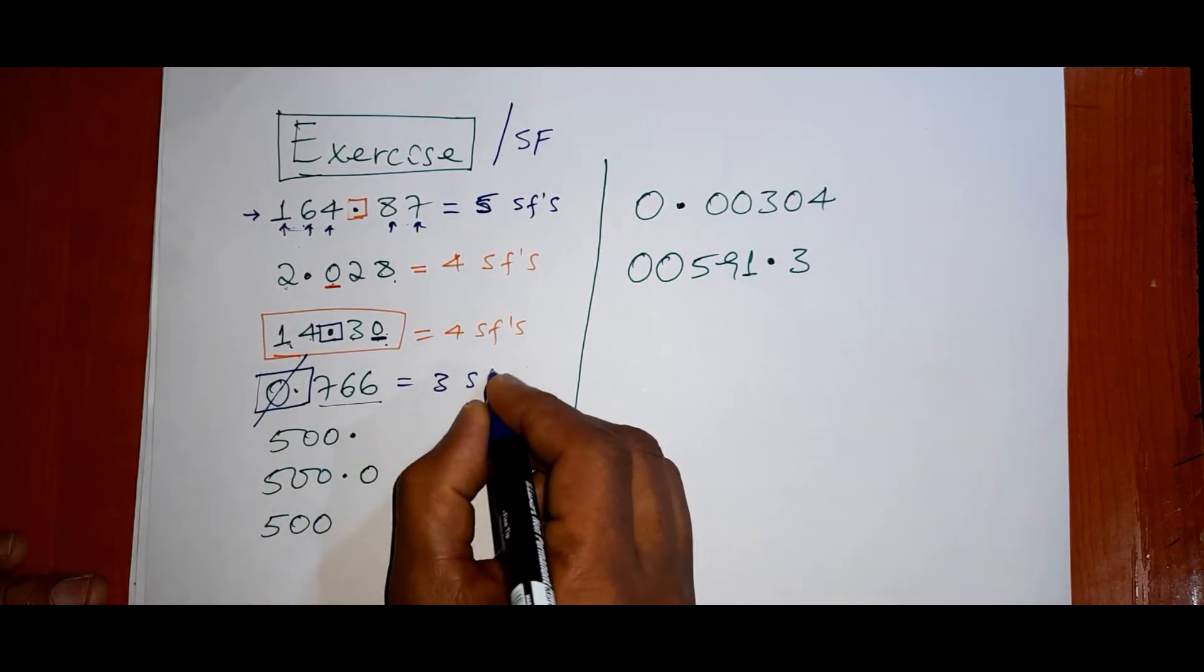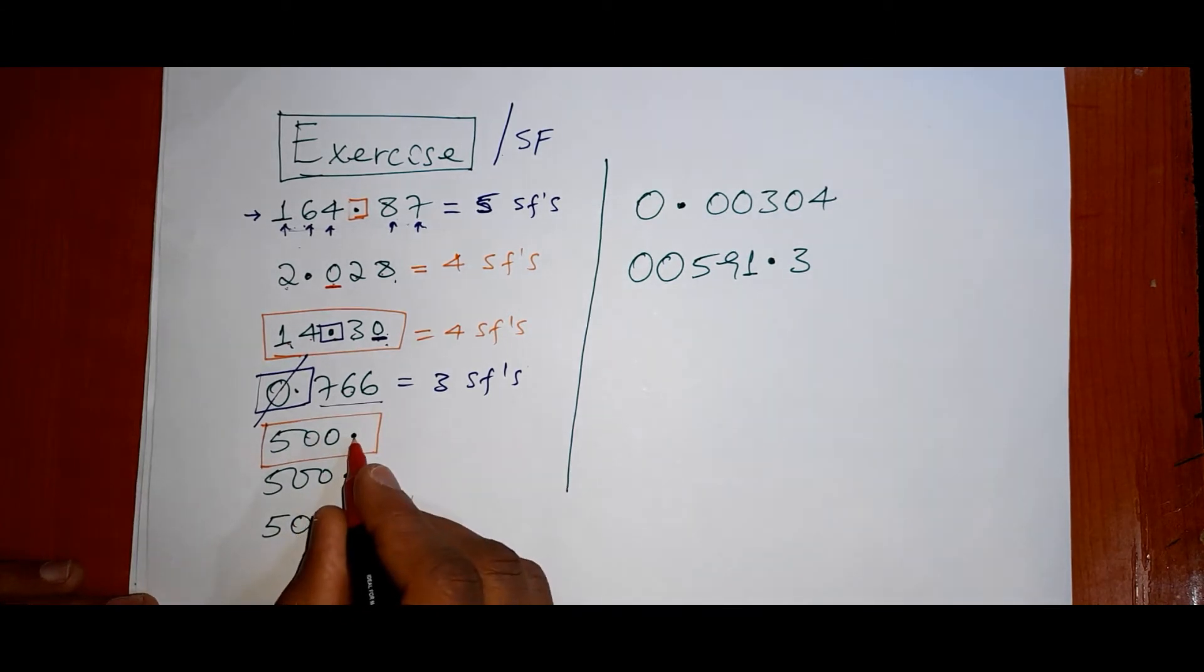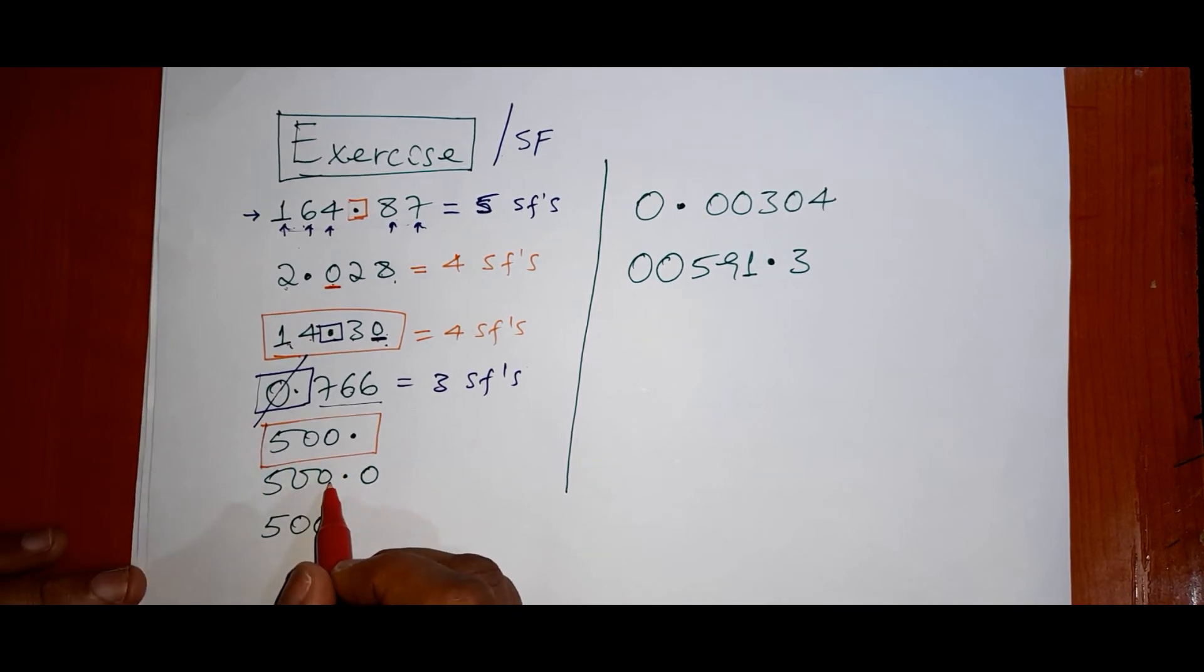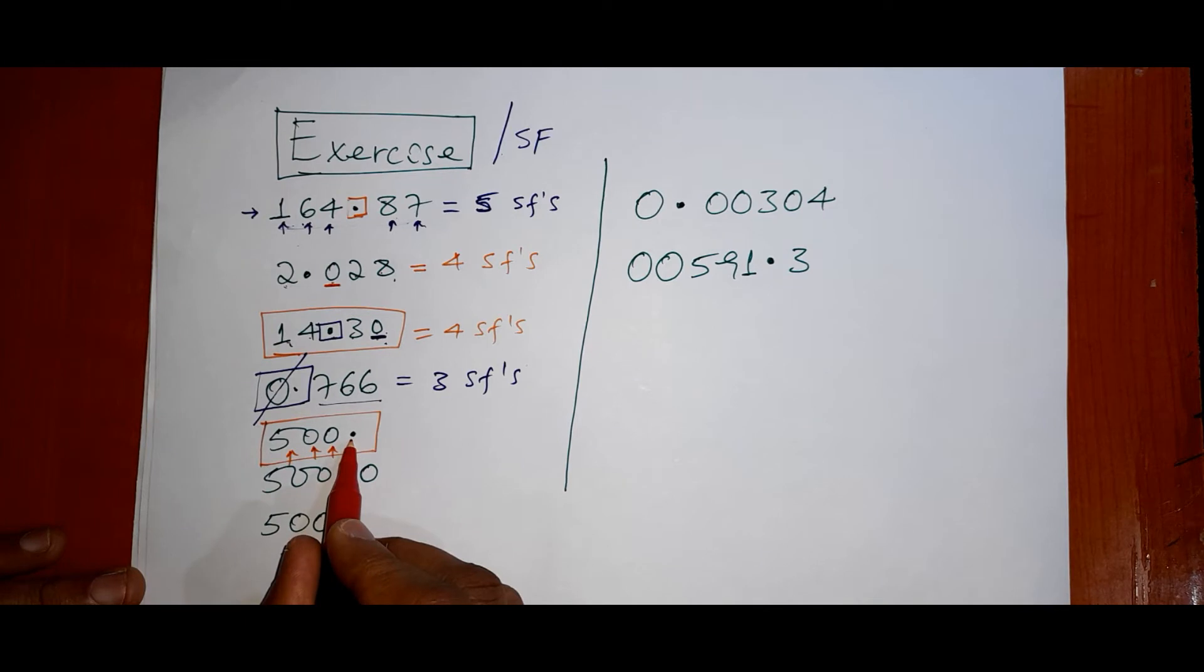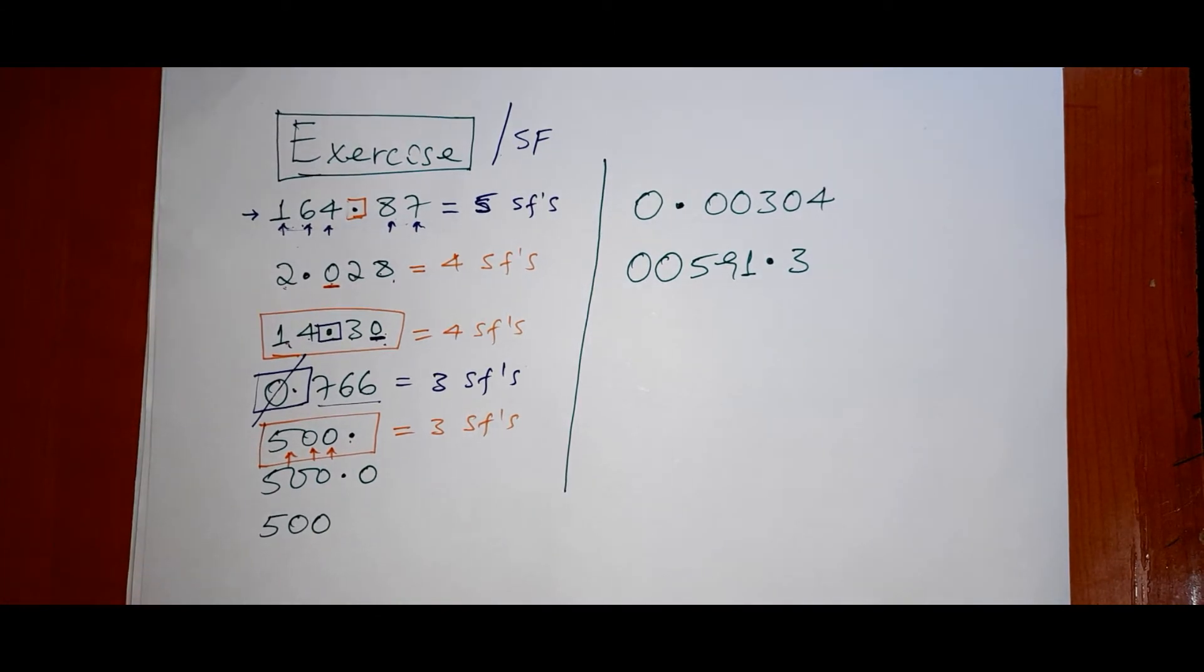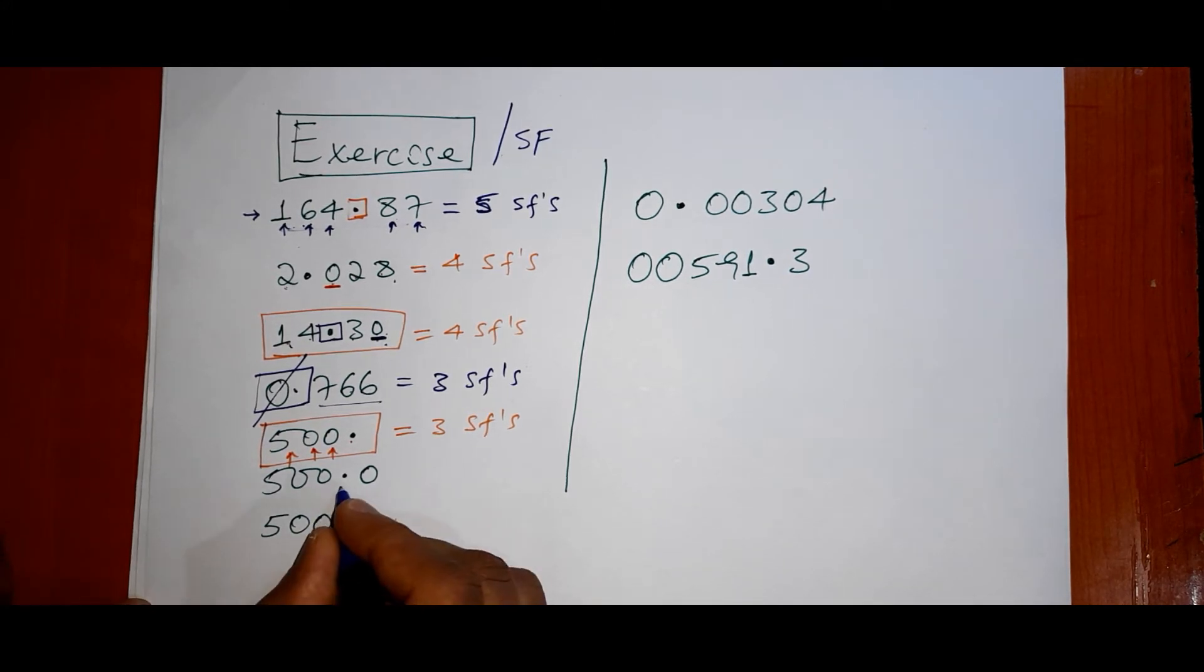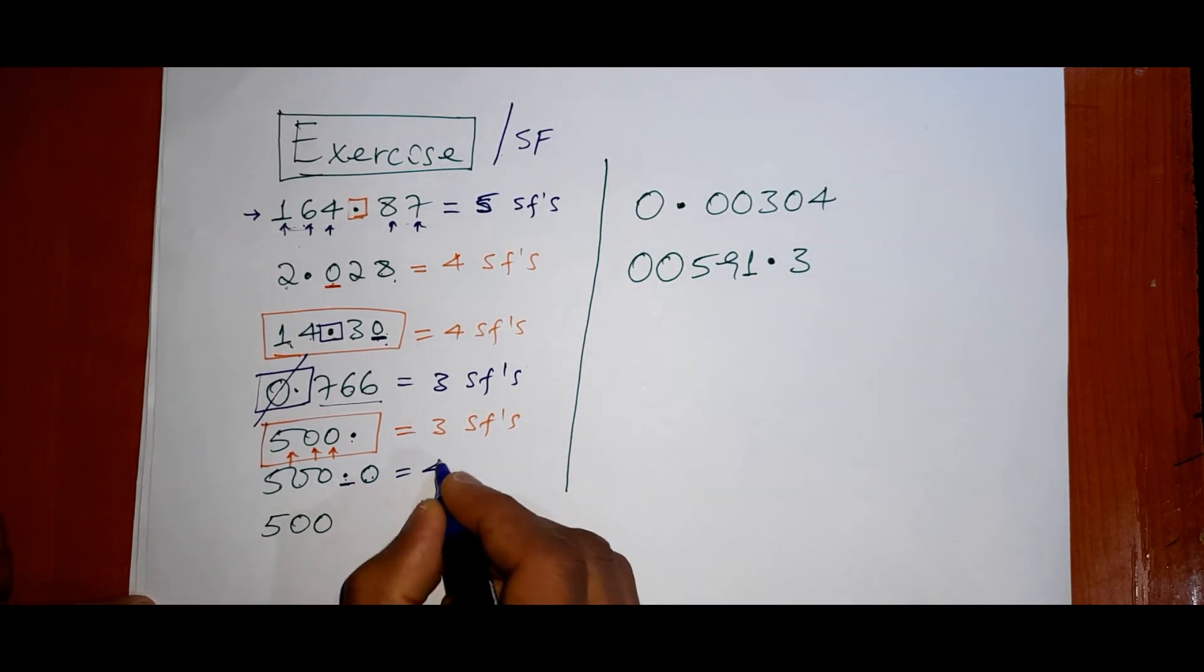Then look, point 500. This number, decimal point. Three significant figures. Then 500, the decimal point is equal to zero at the end of the number. The decimal point, so the decimal point and significant figures.